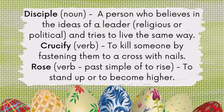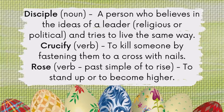Disciple. A disciple is a person who believes in the ideas of a leader, usually religious or political, and they try to live in the same way. Crucify. To crucify is to kill someone by fastening them to a cross with nails. Rose. Rose is the past simple of to rise, which means to stand up or to become higher.